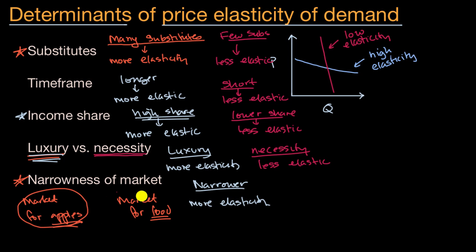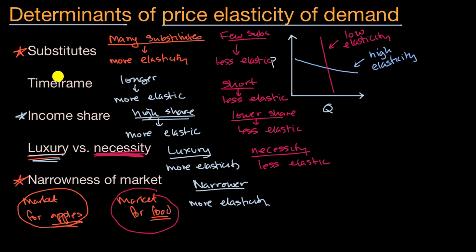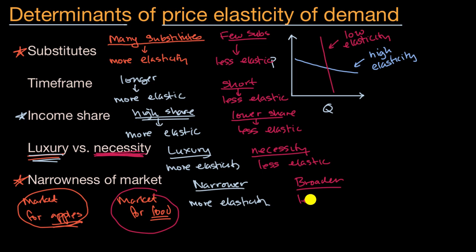But if you have a broader definition of your market — the market for food — it looks a lot more like a necessity. There are very few substitutes for food; you can't eat change or live off air. There's really no substitute for food; it is an absolute necessity. So the broader the market definition, we tend to be dealing with less price elasticity of demand.